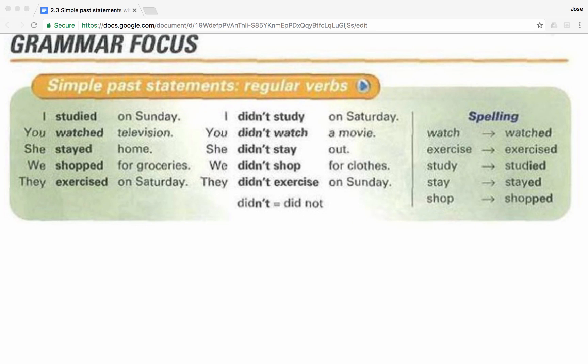Let's get started by practicing these statements in the past. Simple past statements — regular verbs. I studied on Sunday. I didn't study on Saturday. You watched television. You didn't watch a movie. She stayed home. She didn't stay out. We shopped for groceries. We didn't shop for clothes. They exercised on Saturday. They didn't exercise on Sunday.